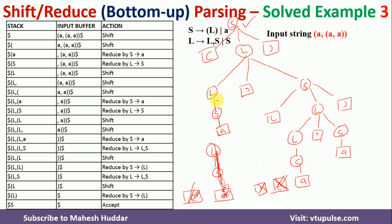This shows that the given input string is valid with respect to the given grammar. This is solved example number 3. The link for other solved examples is given in the description below. Follow those videos to understand more numerical examples on shift-reduce parsing. If you liked the video, do like and share with your friends. Press the subscribe button for more videos and the bell icon for regular updates. Thank you for watching.